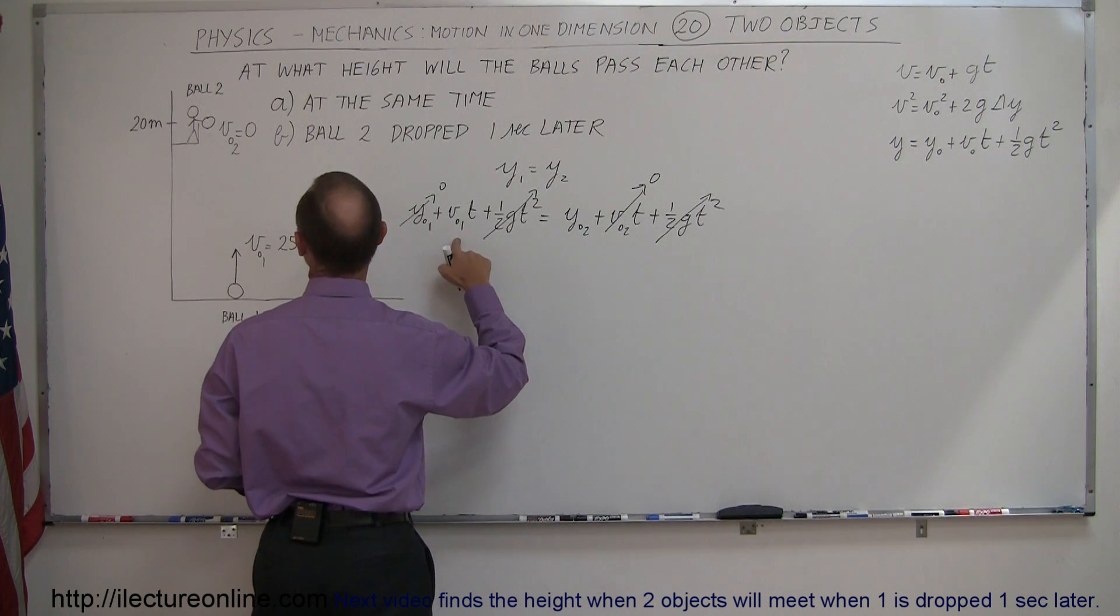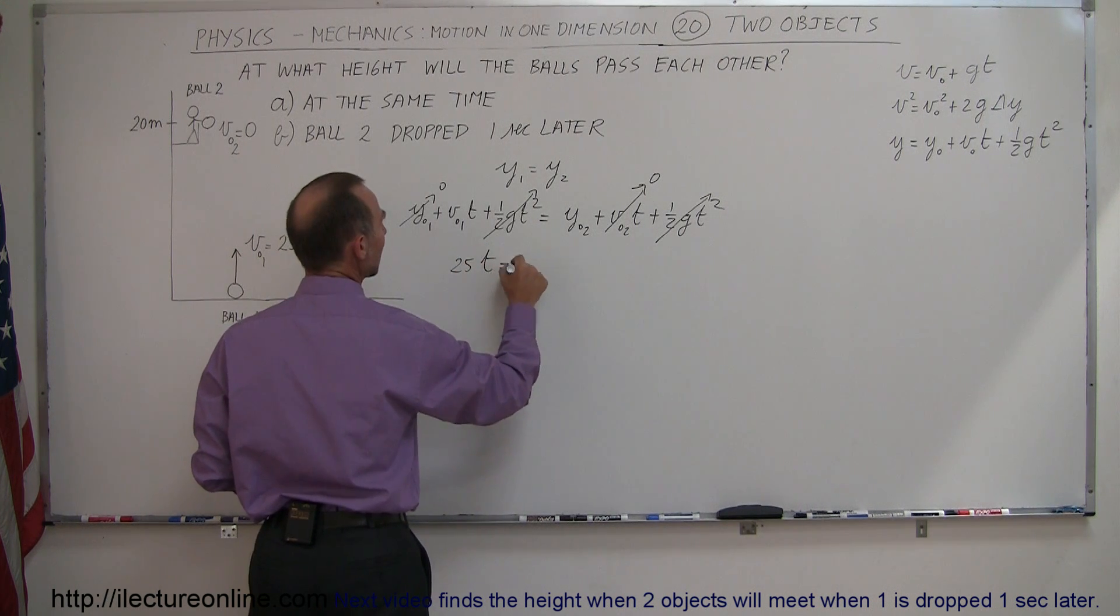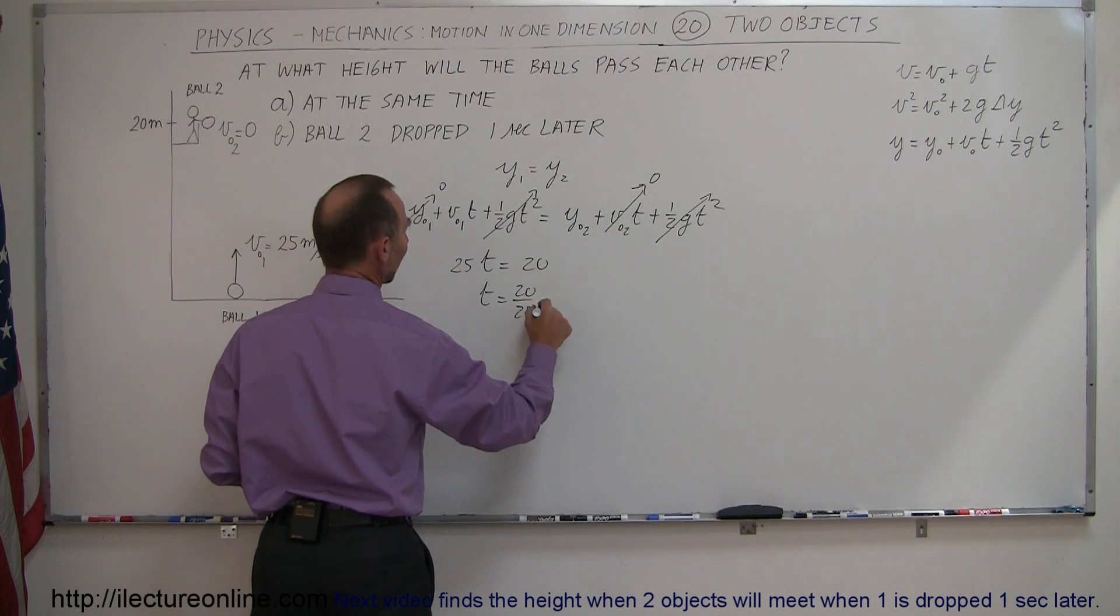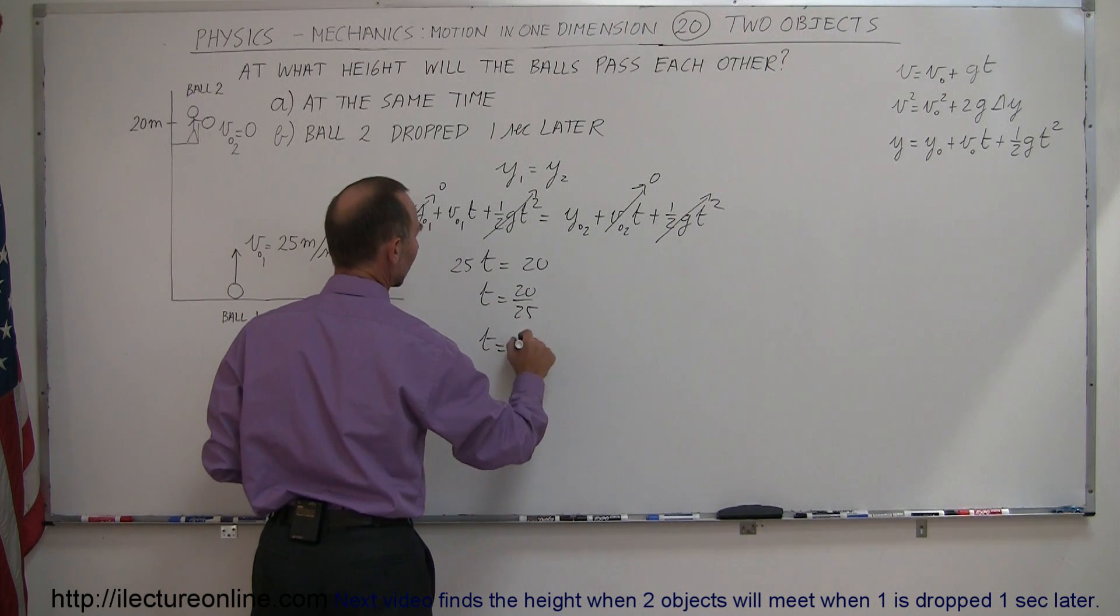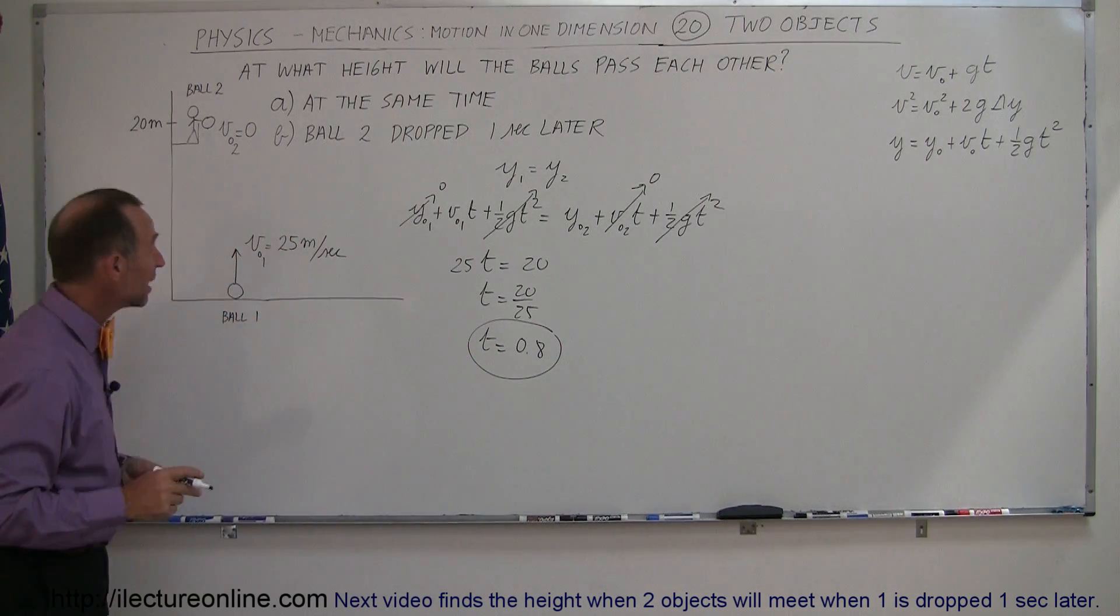So, we have y02, that's 20 meters, and we have v initial one, that will be 25, so we have 25t equals 20, so t equals 20 divided by 25, so t is equal to 0.8. So, after 0.8 seconds, they will meet.